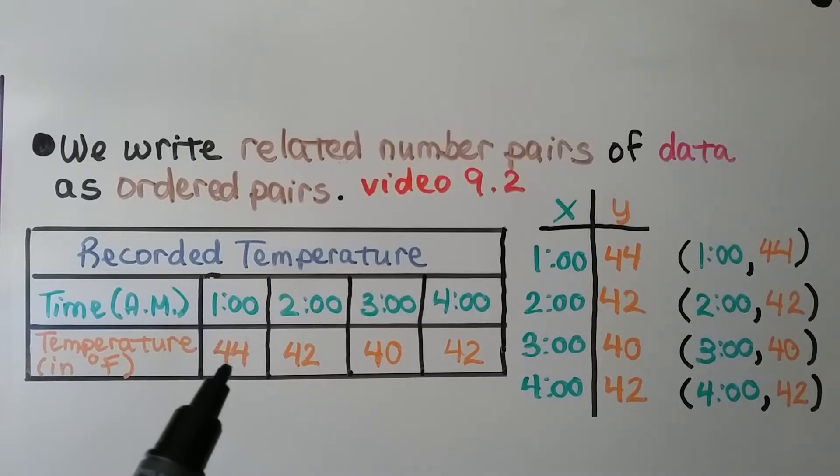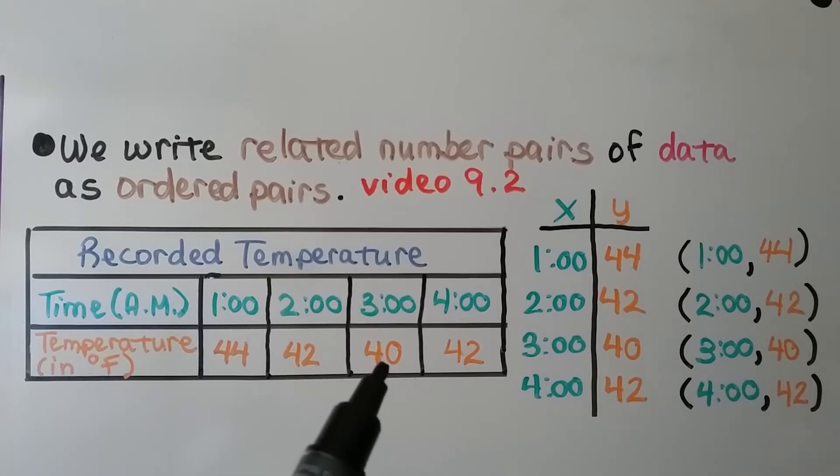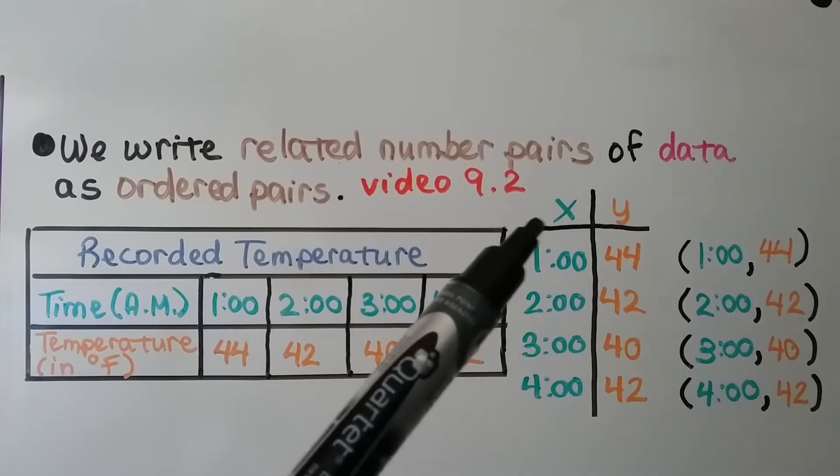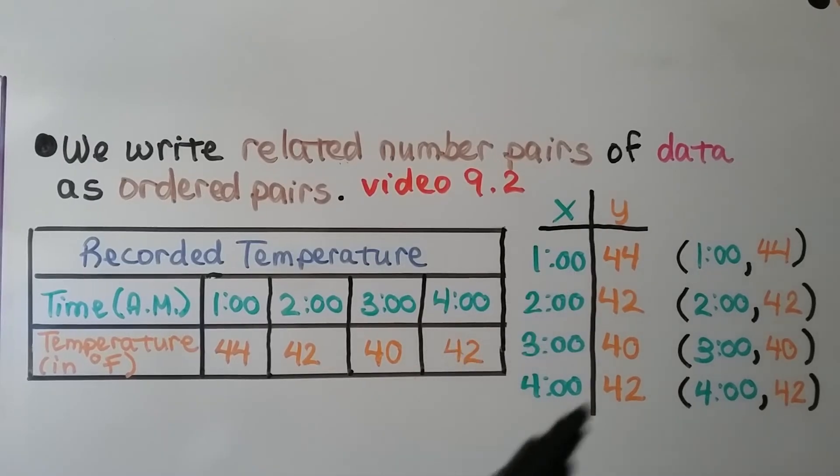We can see at 1 a.m. it's 44 degrees, at 2 a.m. it's 42, at 3 a.m. it's 40 degrees, and at 4 a.m. it's 42 degrees. We can write them as x, y values, and we can write them as ordered pairs.